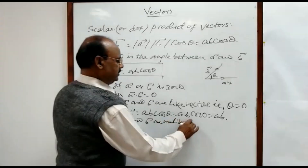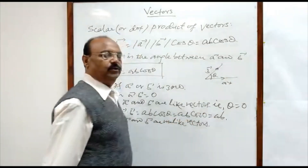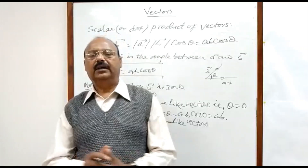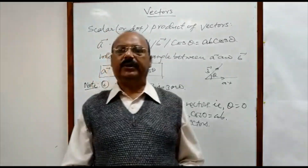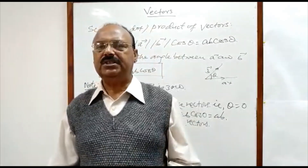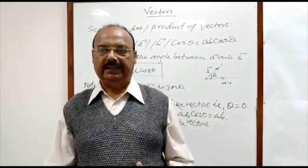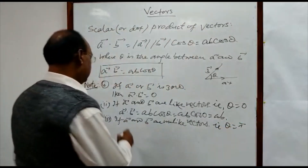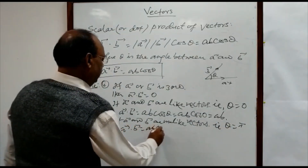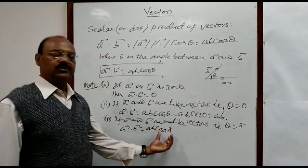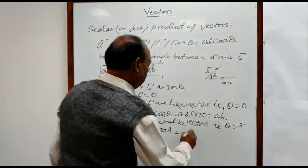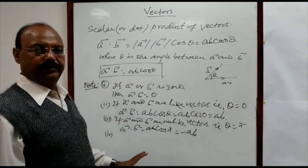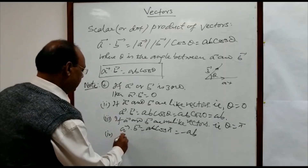Next, if vectors a and b are unlike vectors — two vectors are unlike when they are collinear but their directions are opposite — then theta equals pi, that is 180 degrees. In this case a dot b equals ab cos pi, and since cos pi equals minus one, the result is minus ab.